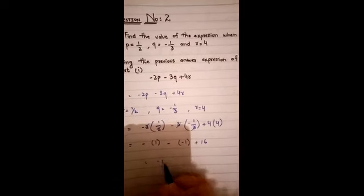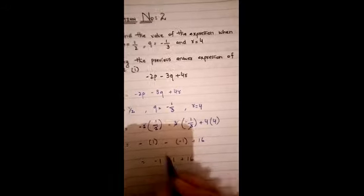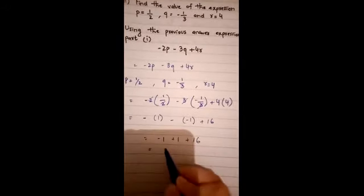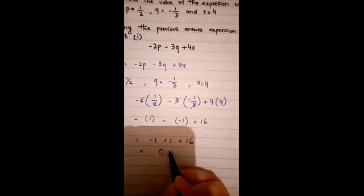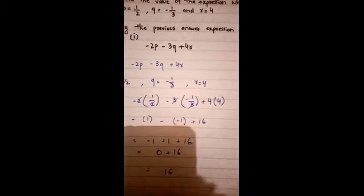4 times 4 is 16, minus 1, minus minus plus 1, plus 16. Minus plus 1 plus 16, minus plus, these are going to give 0 plus 16. That answer is 16.